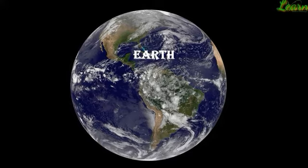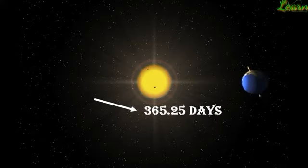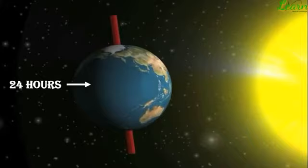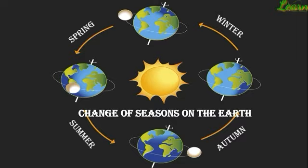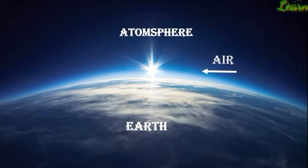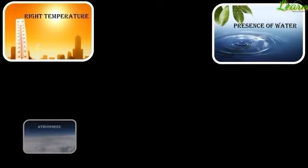Earth is the only planet on which life exists. It takes 365.25 days to complete one revolution around the sun and 24 hours to complete one rotation about its axis. The tilt of Earth's axis is responsible for the change of seasons. There is a blanket of air surrounding the Earth called the atmosphere. The right temperature range, presence of water, suitable atmosphere, and a blanket of ozone support life on Earth.